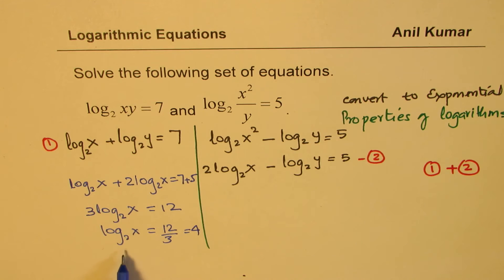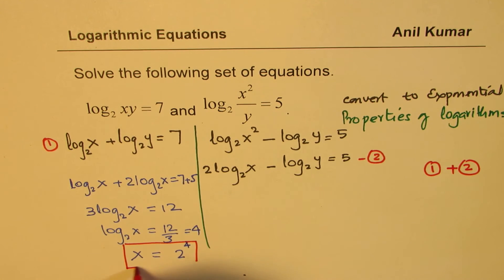And now from here we get the value of x as 2 to the power of 4. So now we'll write it into the exponential form, x being 2 to the power of 4. So we get one of the solutions which is x equals 2 to the power of 4.